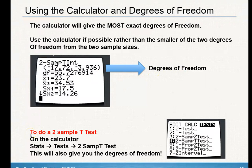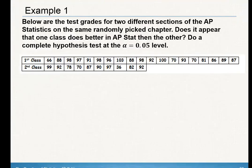If you want to get the degrees of freedom for a two-sample t-test, you're going to do it the exact same way — go to stat, over to test, and notice that number four is your two-sample t-test. You're going to type in your information and it will also give you your degrees of freedom.